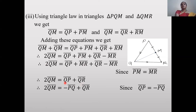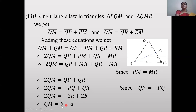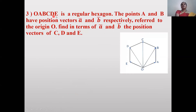Now QP̄ = -PQ̄ = -2ā, and QR̄ = 2b̄. Therefore 2QM̄ = -2ā + 2b̄, which gives QM̄ = b̄ - ā.